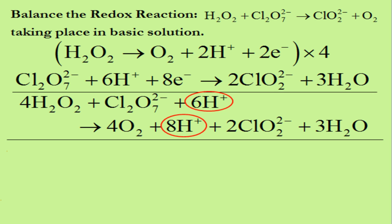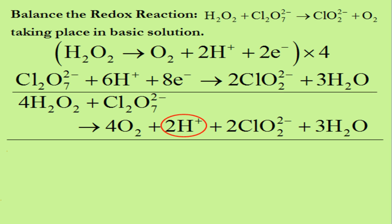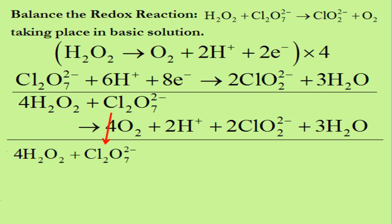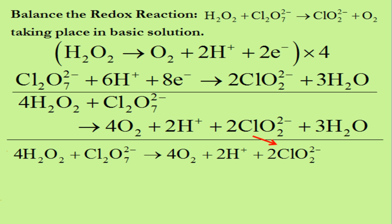Focusing on H⁺ ions, we have six H⁺ on the left and eight H⁺ on the right. We can simplify by subtracting six H⁺ from both sides. This leaves no H⁺ on the left side, and eight minus six, which is two H⁺ on the right side. We can now rewrite the equation as: 4H₂O₂ + Cl₂O₇²⁻ → 4O₂ + 2H⁺ + 2ClO₂²⁻ + 3H₂O.